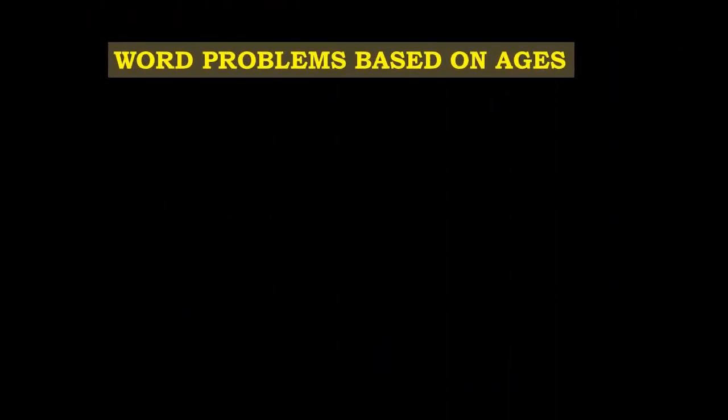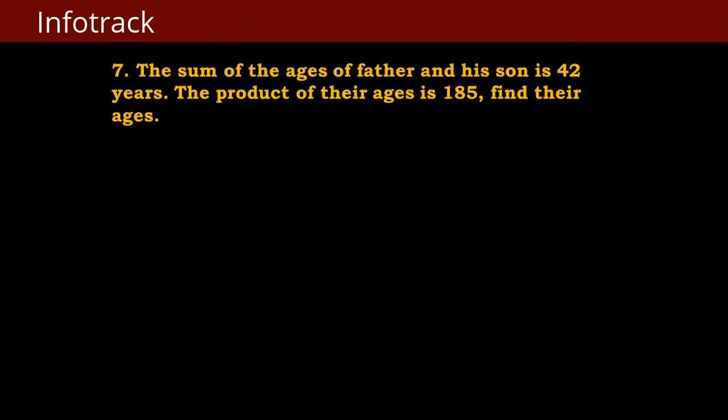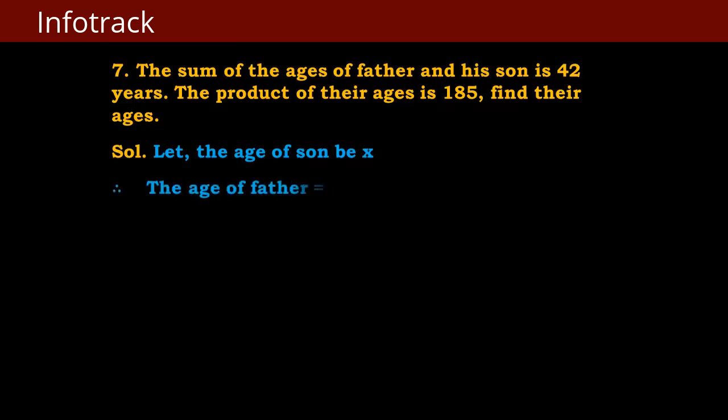We will start with word problems based on age. The sum of ages of a father and his son is 42 years, the product of their ages is 185. Find their ages. It is given the sum of the ages of father and son, so let the age of the son be x. That means the age of the father will become 42 minus x.